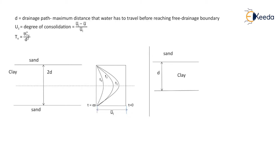We can also draw the pore water pressure diagram for soil confined at one side, where water is allowed to drain from only one side — the upper side. Here we consider a clay layer situated on an impermeable layer, with sand present on the upper side. Drainage occurs only from one side, so the drainage path equals the full height of the clay layer. On the upper side, excess pore water pressure immediately becomes zero, but on the bottom side it gradually decreases from ūi to zero, going through t1, t2, and t3 until it eventually reaches zero.